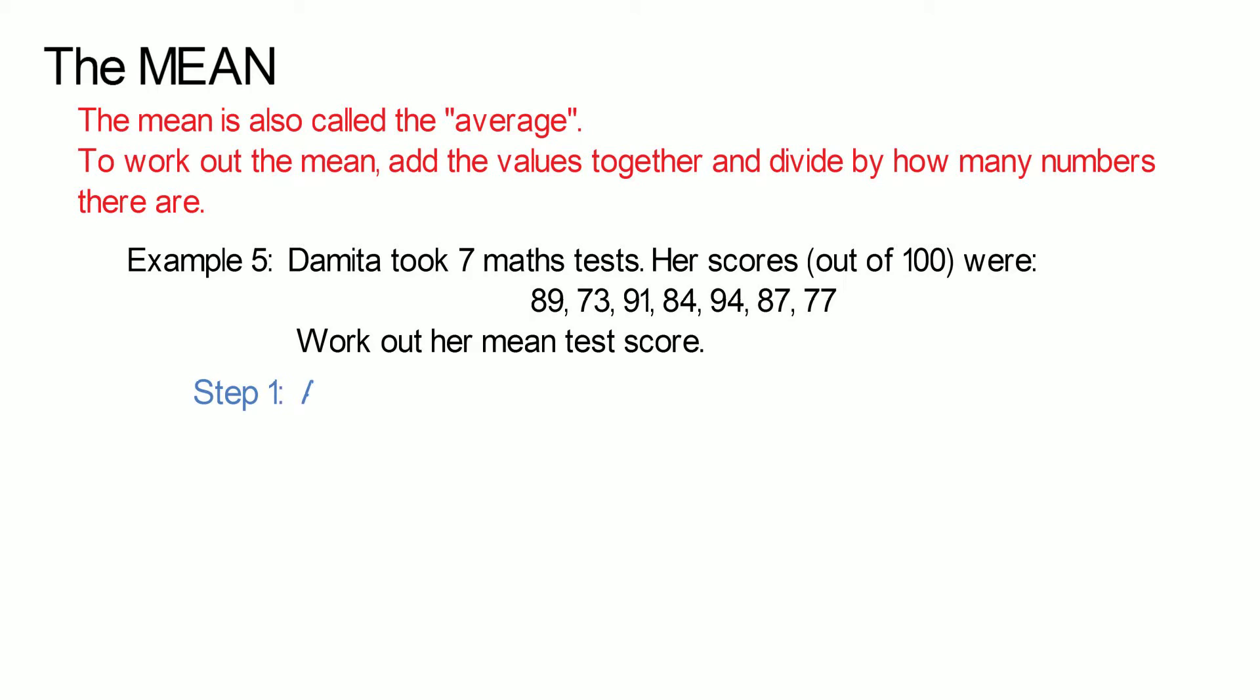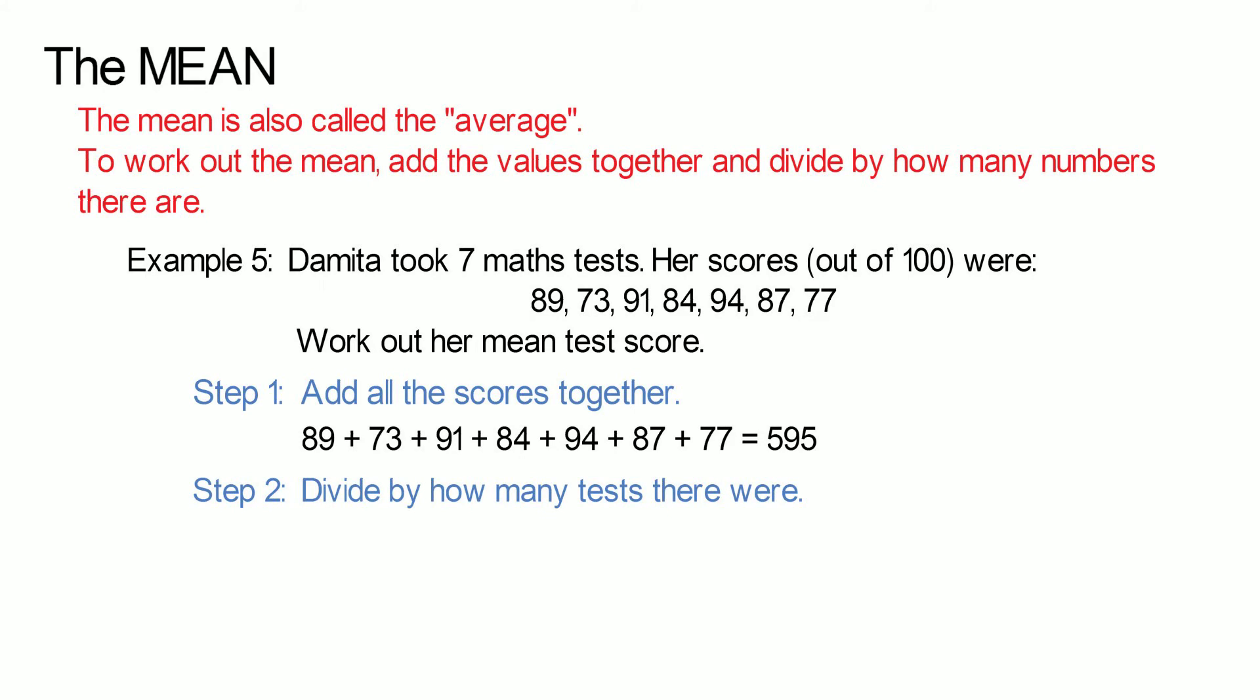Step 1: Add all the scores together, which gives us a total of 595. Step 2: Divide by how many tests there are. In this case 7. So 595 divided by 7 is 85.